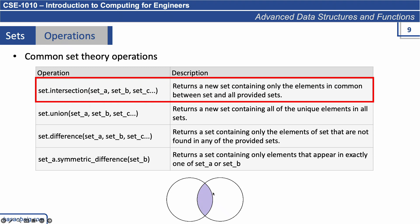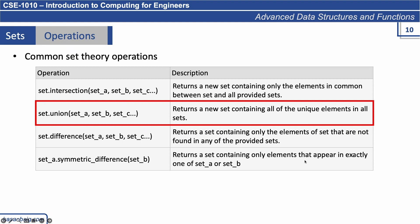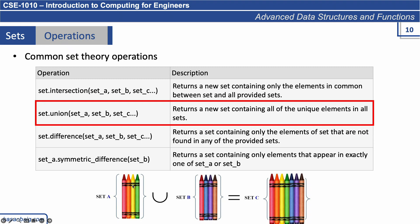Union returns a new set containing all of the unique elements in all sets. For example, here we have crayons - the pink crayon is common to both. All of the crayons are unique, so the new set with the union of set_a and set_b would contain all unique elements, with any repeated element appearing only once.